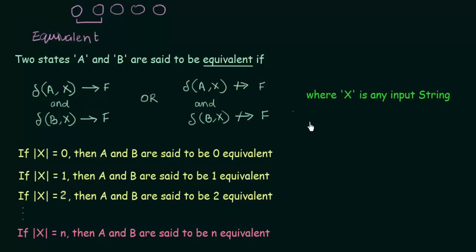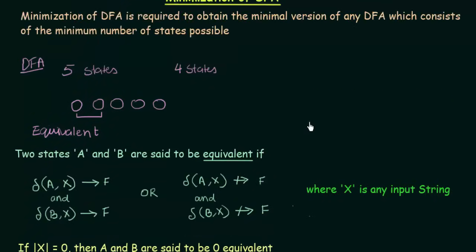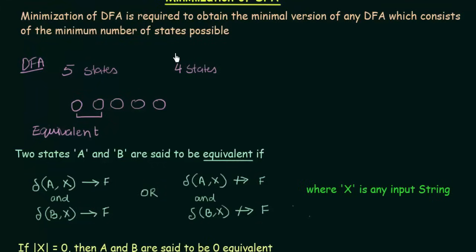And why did we need this equivalent property? We need it in order to combine the states, in order to reduce the number of states, to get the minimum number of states possible, in order to design the minimal version of any DFA. So, this was the theoretical explanation. And in the next lecture we will be seeing an example which will make it very clear to you. So, see you in the next one with an example.